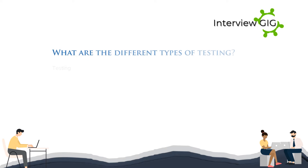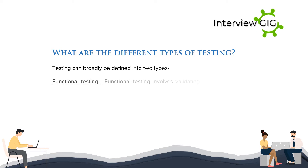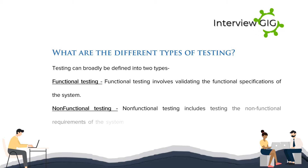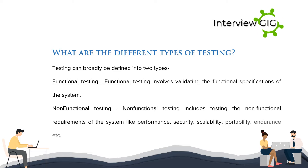What are the different types of testing? Testing can broadly be defined into two types. Functional testing involves validating the functional specifications of the system. Non-functional testing includes testing the non-functional requirements of the system like performance, security, scalability, portability, endurance, etc.